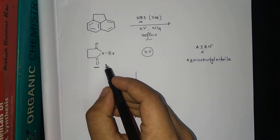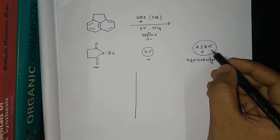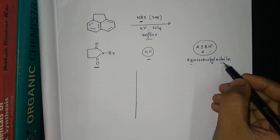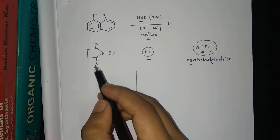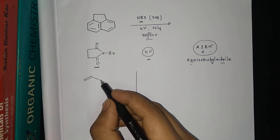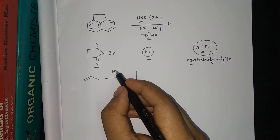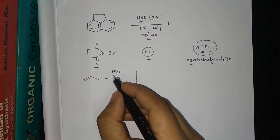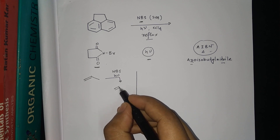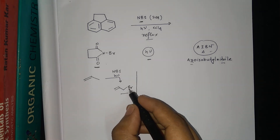Generally, NBS is used with hν condition or AIBN and heating. AIBN means azobisisobutyronitrile. NBS generally performs allylic or benzylic bromination. When NBS is used under hν or similar conditions, it will form the allylic bromination product.